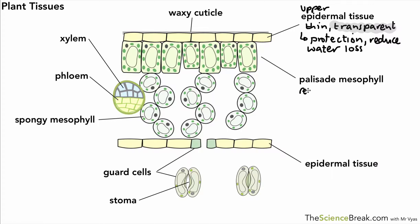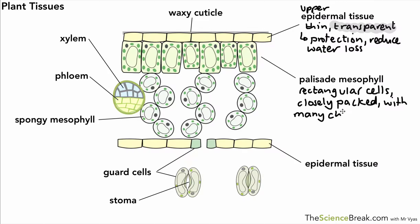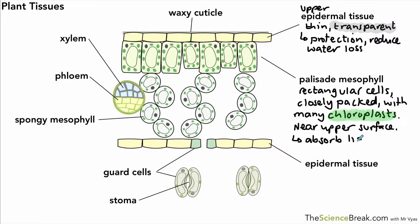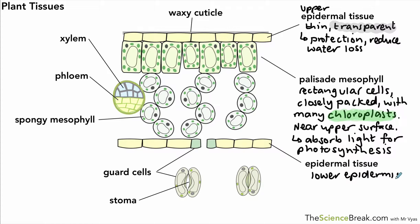Combined with the waxy cuticle, it reduces water loss quite significantly, and it's transparent to allow light through. The palisade mesophyll tissue is made of rectangular cells which are closely packed together. They have many chloroplasts — out of all the cells in the leaf, they have the most. Chloroplasts are really important because they contain chlorophyll, which absorbs sunlight for the process of photosynthesis. The palisade mesophyll tissue is always found near the upper surface of the leaf where light hits the plant, and its main purpose is to absorb light for photosynthesis.